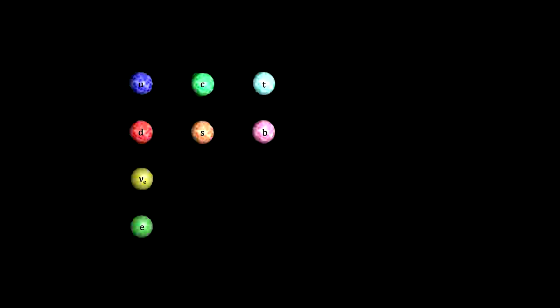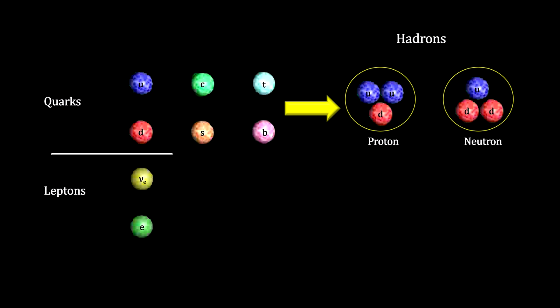When confronted with a vast number of observations, a first step to understanding is categorization — finding the similarities and differences between things. When it comes to elementary particles, we have already made some distinctions. We have the small light particles like the electron and the neutrino, called leptons. And we have the quarks that make up the heavy particles like protons and neutrons, called hadrons. Everything we see around us is made of these three stable elementary particles: the electron, the up quark, and the down quark.